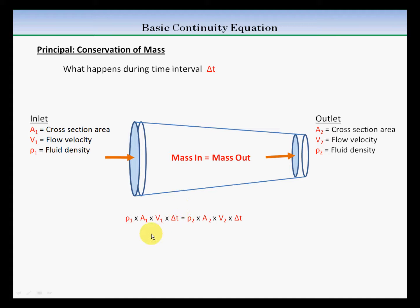Notice that delta t is common on both sides, which can be cancelled, and the relationship reduces to a relationship between density, cross section area, and velocity at the inlet and outlet.